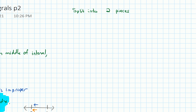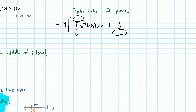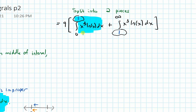We need to split this into two pieces since we can only handle one improper thing at a time in an integral. So the 9 stays outside, and I split it: the integral from 0 to 1 of x³ ln(x) dx, plus the integral from 1 to infinity of x³ ln(x) dx. I chose 1 as the splitting point — any number works.